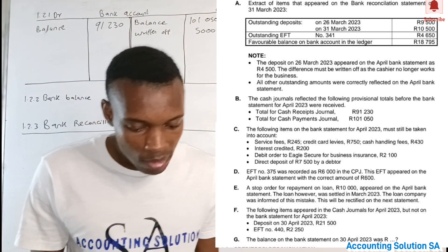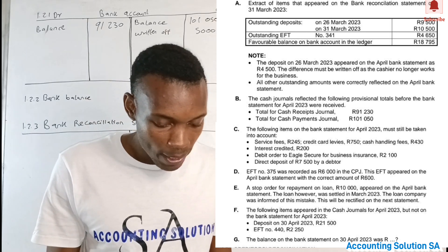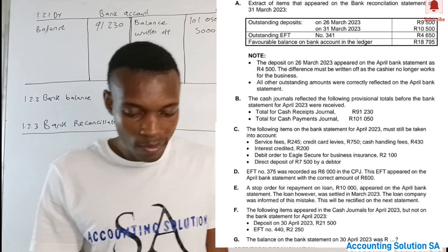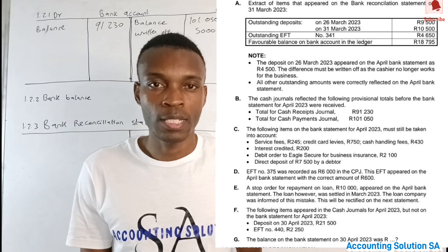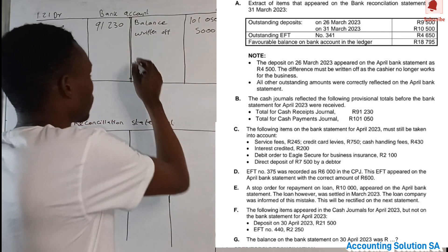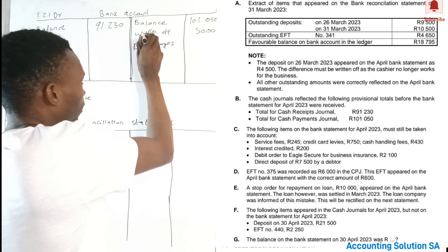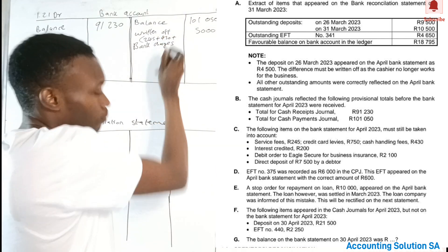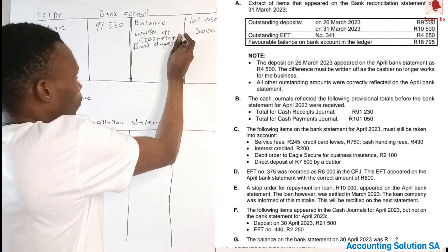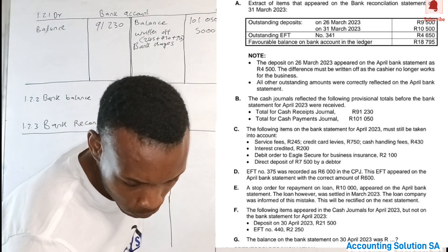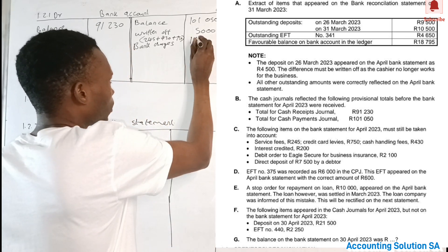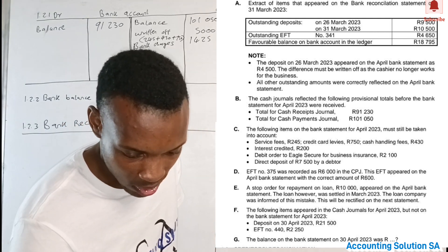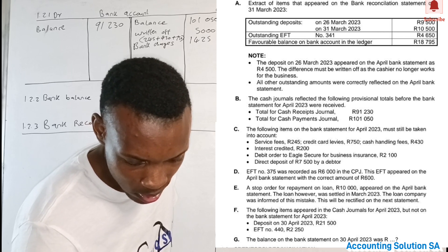Number C: the following items on the bank statement for April 2023 must still be taken into account. We have a service fee of 245, a credit card levy of 750, and a cash handling fee of 48. All these amounts are called bank charges — and bank charges are obviously a payment. Adding them together: 245 plus 48 plus 750 gives us a total of 1,425.